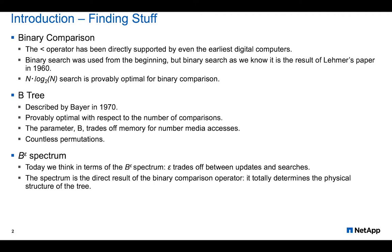The B-tree was described in 1970 and introduced a parameter B that permits one to trade off the number of media accesses versus memory consumption when searching for things on secondary storage. Today we think in terms of the B-epsilon spectrum, where we further parameterize B with another parameter epsilon that permits one to optimize between updating and searching.